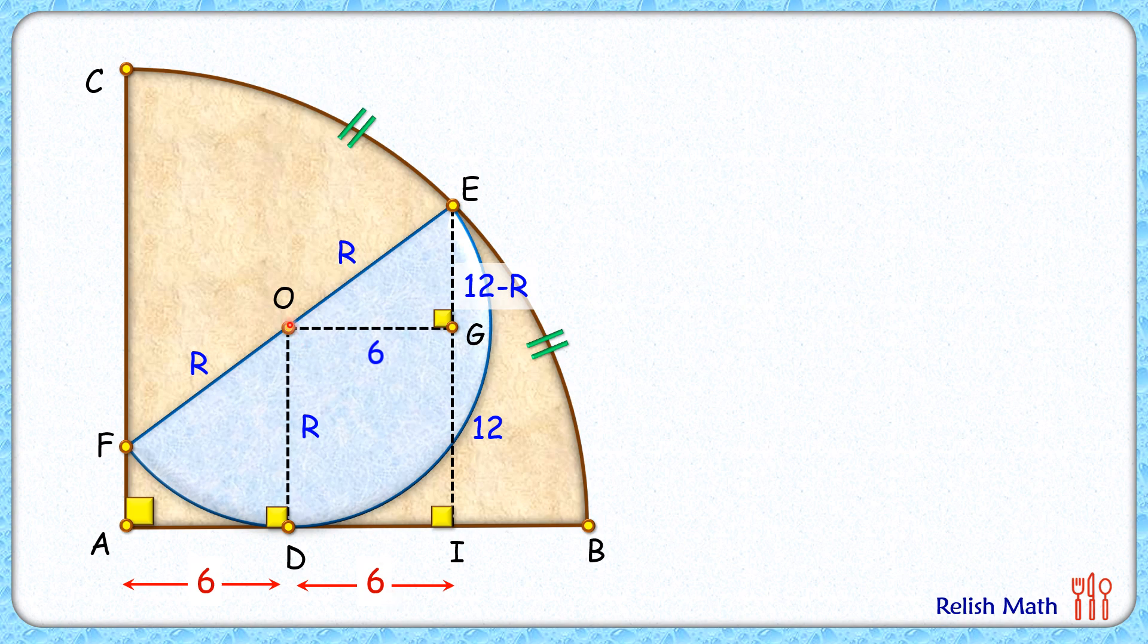Now in triangle OEG, applying Pythagorean theorem we will get 6 squared plus (12 minus R) squared equals R squared. Opening up the bracket on the LHS will get these terms. Now both sides LHS and RHS R squared will get cancelled down.